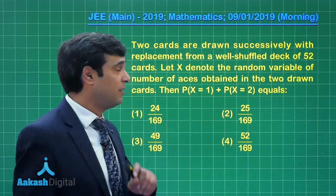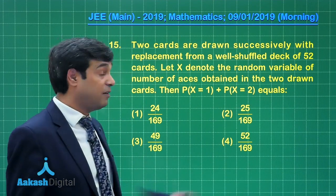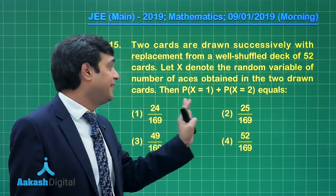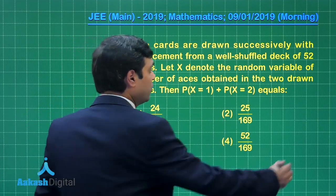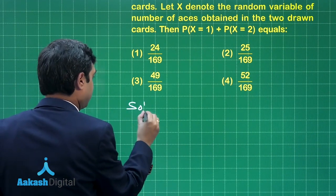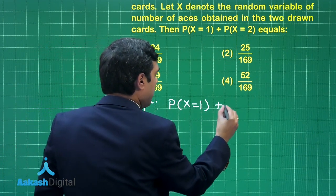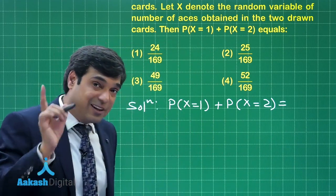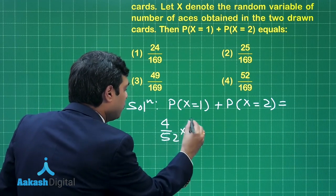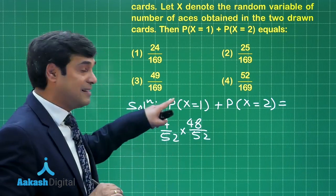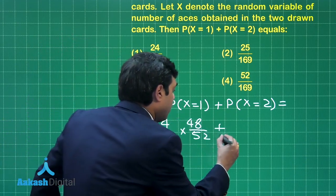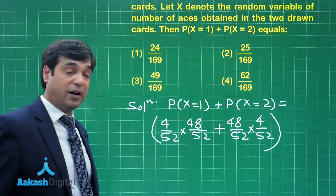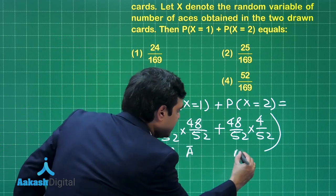Let us move on to question number 15. Two cards are drawn successively with replacement from a well-shuffled deck of 52 cards. Let X denote the random variable of number of aces obtained in the 2 drawn cards. We need to find P(X=1) + P(X=2). For X equals 1, that is exactly one ace: the probability is (4/52)(48/52) for first ace second not, plus (48/52)(4/52) for first not second ace.